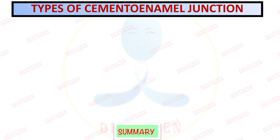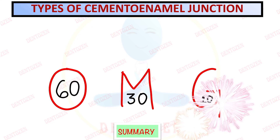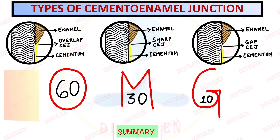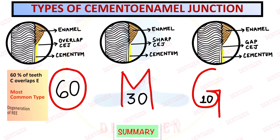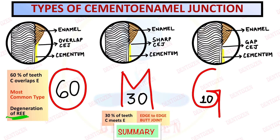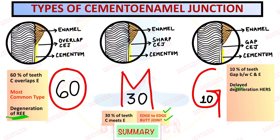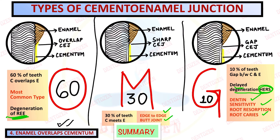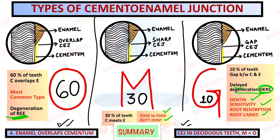To summarize, remember OMG: Overlap (60%, most common, due to early degeneration of reduced enamel epithelium), edge-to-edge or butt joint (30%, sharp line meeting), and gap (10%, due to delayed degeneration of HERS, can cause dentine sensitivity, root resorption, and root caries). You can also mention the fourth type - enamel overlapping cementum - which is rare. In deciduous teeth, edge-to-edge is more common followed by overlap.